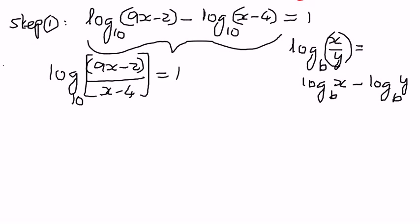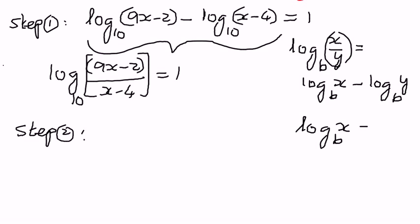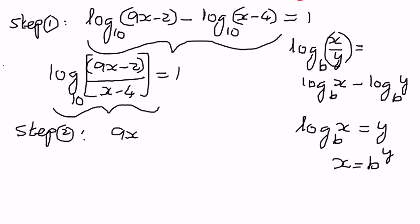We know that we can express a logarithm in terms of an exponent, as we have seen in our previous examples. If we have log x to the base b equal to y, then x equals b to the power of y. Therefore, we can write this expression as: (9x minus 2) divided by (x minus 4) is equal to 10 to the power of 1.